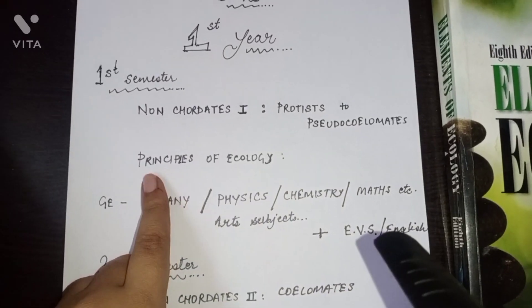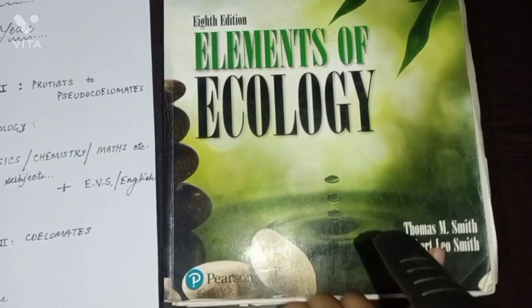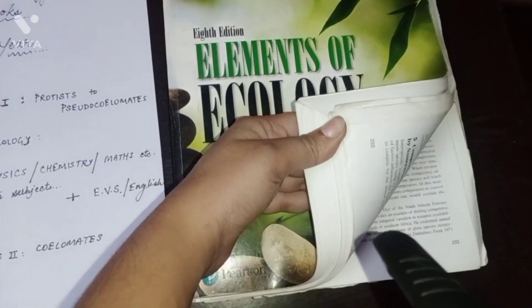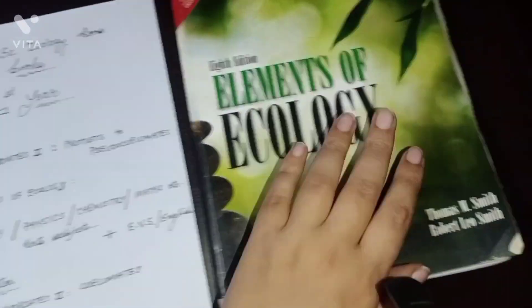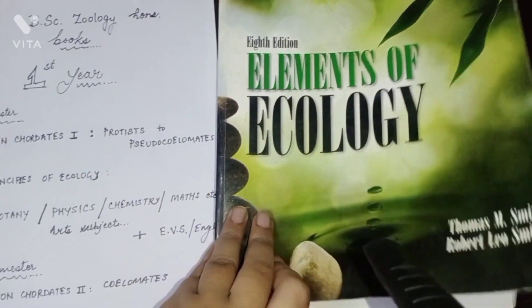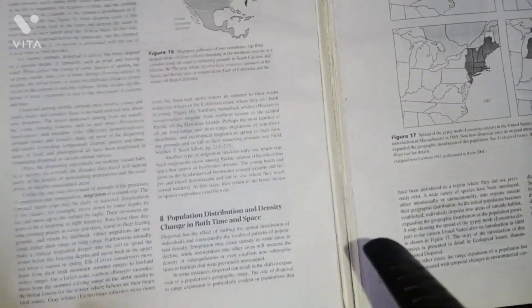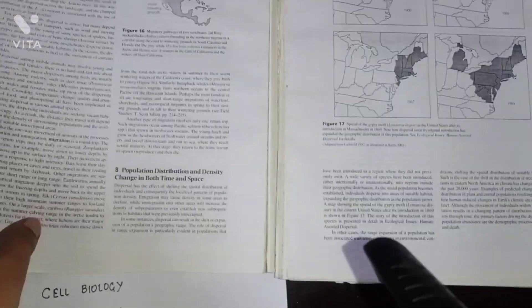The second subject is Principles of Ecology. For this, Smith and Odum (O-D-U-M) are the recommended books. Don't buy them first — but Smith is okay if you want a better understanding, and Odum is also a good book. So you can take either of them.